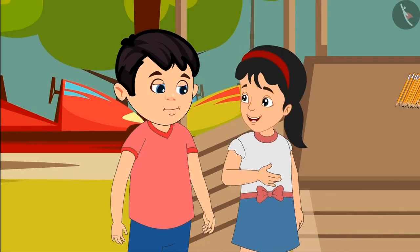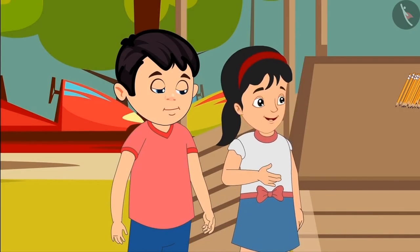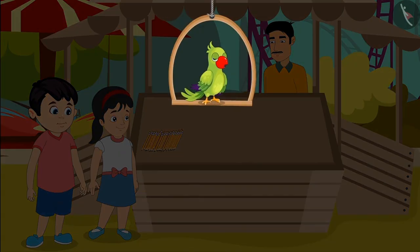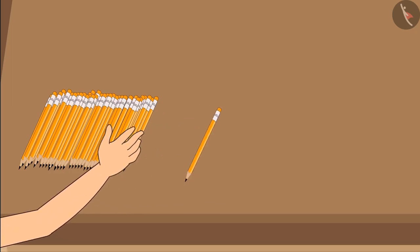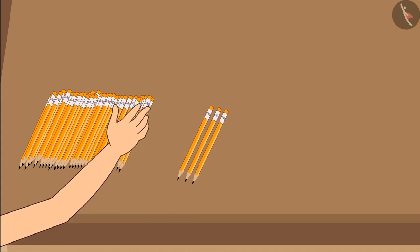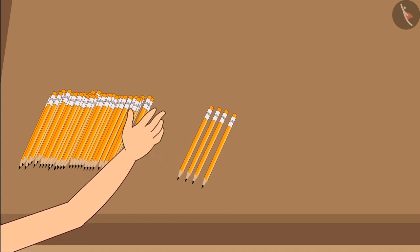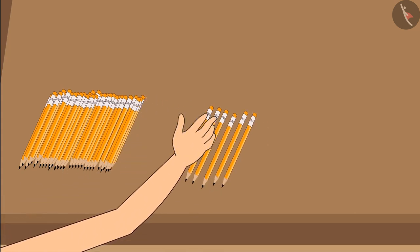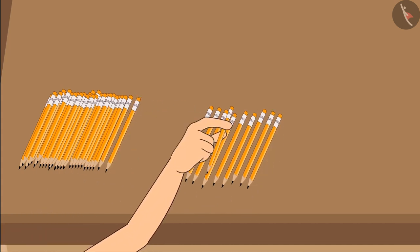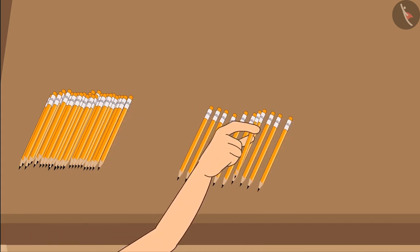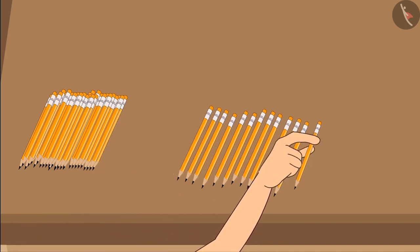Choto, first I will do it. Uncle, please give me the pencils. Uncle has given some pencils to Pinky. Let's see how she is counting them: 1, 2, 3, 4, 5, 6, 7, 8, 9, 10, 11, 12, 13...